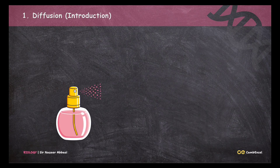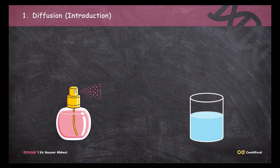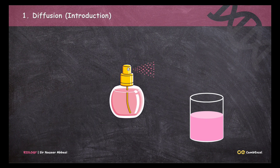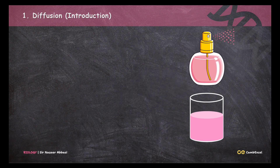Have you ever noticed that whenever we spray a perfume in one corner of the room, the fragrance molecules spread all along the room and reach the other corners? Similarly, if we take a glass of water and add any colored substance in it, the color molecules will move through the water and change its color. Both of these phenomena happen because of diffusion.